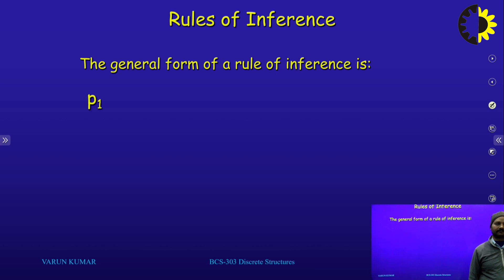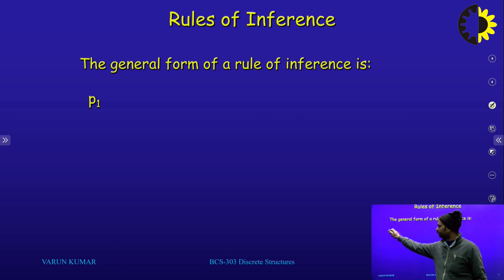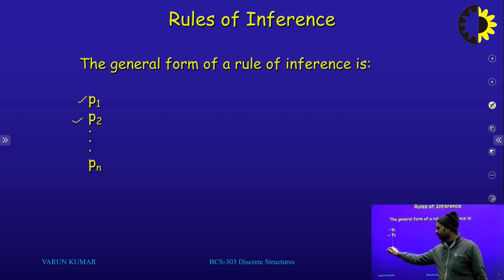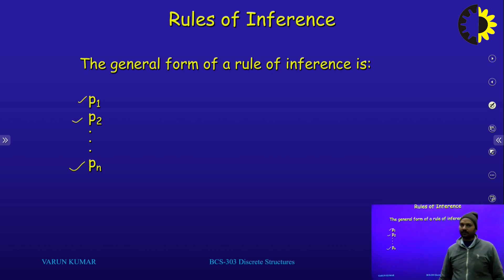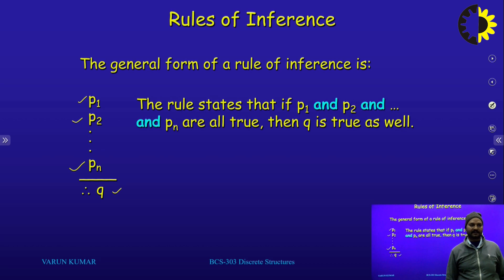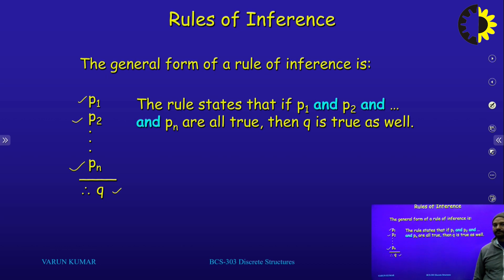The general form of a rule of inference: if the first statement p1 is true, the second statement is also true, and so on up to pn — the nth proposition is also true — then we have some conclusion q. The rule states that p1 and p2 and so on up to pn all must be true, then q is true as well. The conclusion is valid.